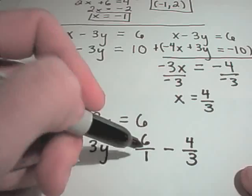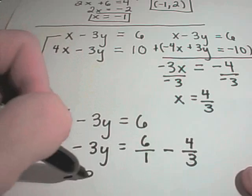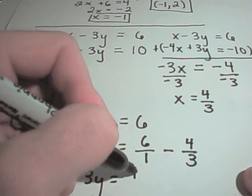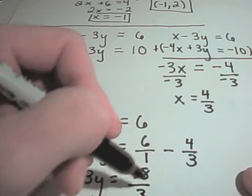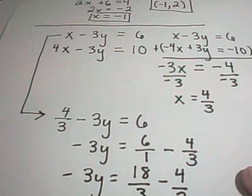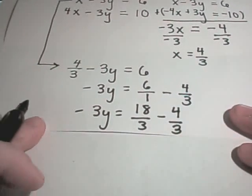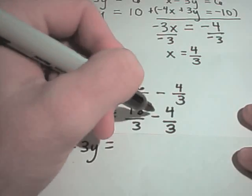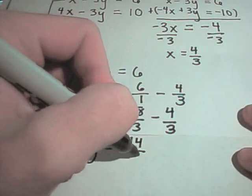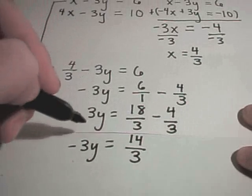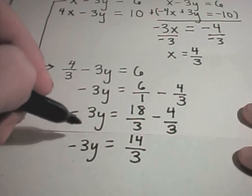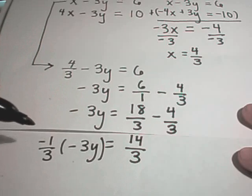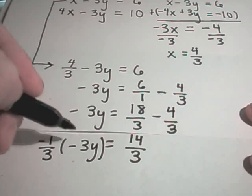And again, I'm writing 6 as 6 over 1 because I'm going to have to get common denominators. So I can multiply top and bottom of the first fraction by 3. That will give me 18 over 3 minus 4 over 3. So I've got negative 3y. 18 minus 4 is 14 over 3. And then I'm going to multiply both sides. I'm going to divide by negative 3, which is equivalent to multiplying by negative 1 third. The negatives will cancel. The 3s will cancel.